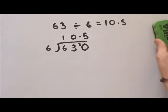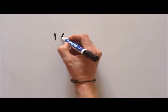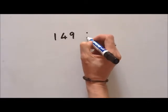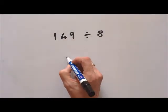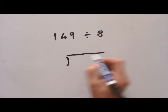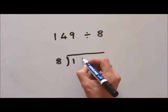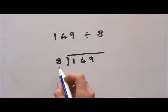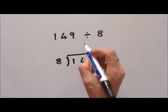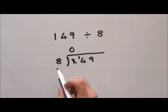That's a relatively simple bus stop division with a decimal number. Let's try something a little bit more complex: one hundred and forty-nine divided by eight. We put it in our bus stop — eight is the divisor. How many eights can we get out of one? Well, we can't, so we put a zero there and carry the one.